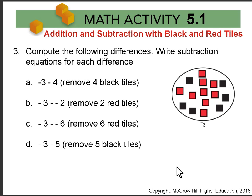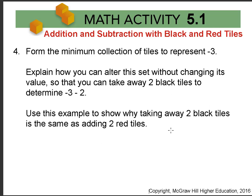Notice the importance of having the big pile here. If I had just started with 3 red tiles for negative 3 — a minimal collection — I would not have been able to take away 4 black tiles, since I wouldn't have had any. This is why we have the bigger set. You can always start with your number and then add 0 pairs to get to the set size you need. In question 4, we have you explain this: make a minimal collection of 3 red tiles and explain how you can proceed from there.